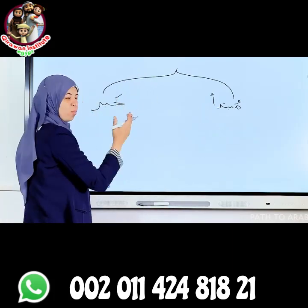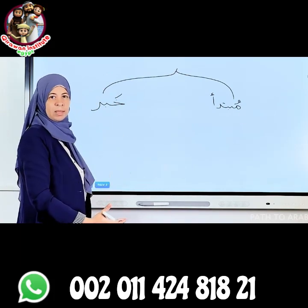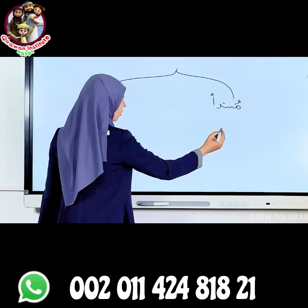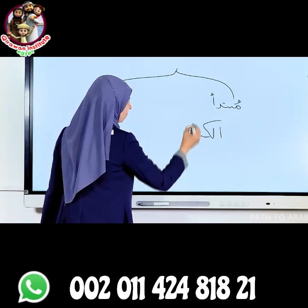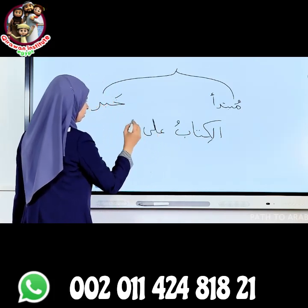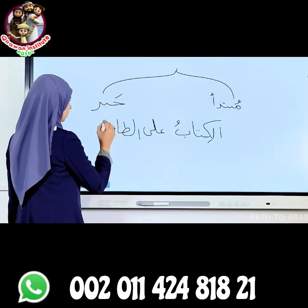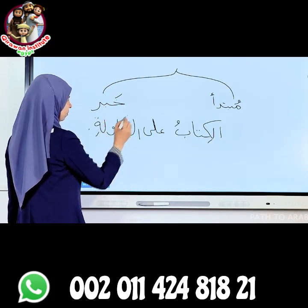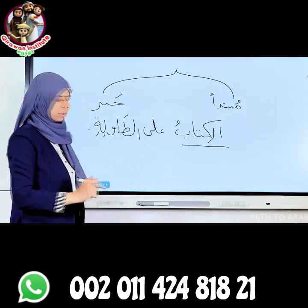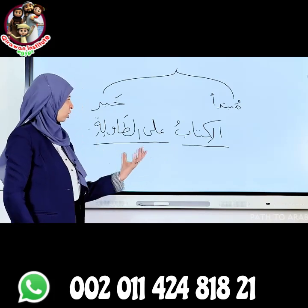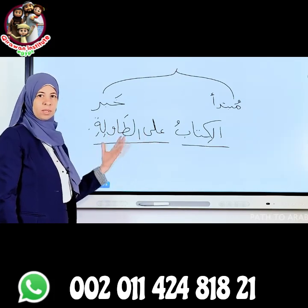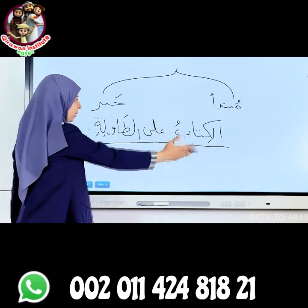الجملة الإسمية: مبتدأ وخبر. المبتدأ is a noun and الخبر completes the sentence with meaning. For example: الكتاب على الطاولة — the book is on the table. الكتاب is المبتدأ, the subject. على الطاولة is the predicate. The predicate can be one word or more than one word. هذا مبتدأ وهذا خبر.